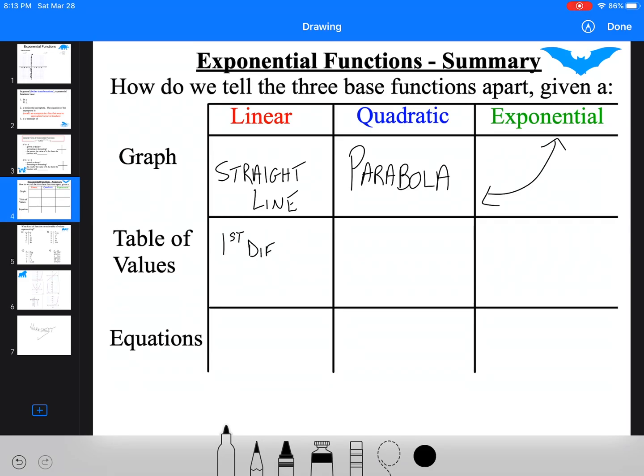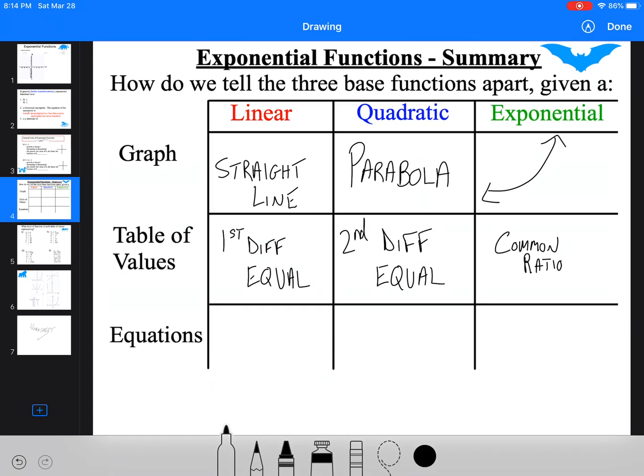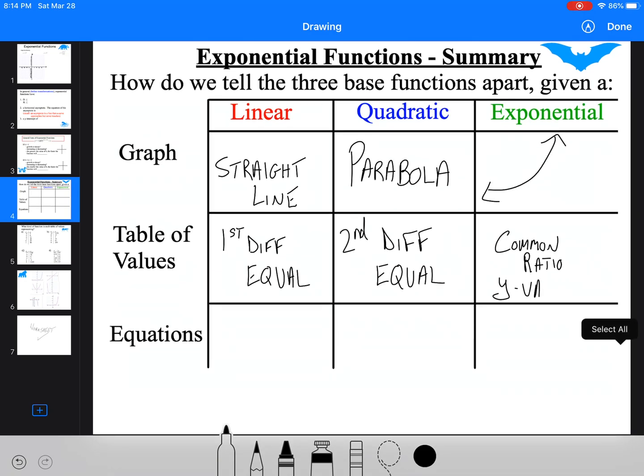So in a table of values, a linear, the first differences are always equal. A quadratic, the second differences are equal. And in an exponential, we're actually looking for a common ratio between the y values, because they should be increasing by some multiple each time. So like, 2 to the 3 has gone up three times, two times, two times, two of y values.